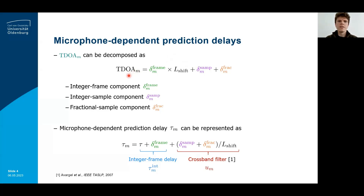By splitting the TDOA TDOA_m into a corresponding integer frame component delta_frame, a remaining integer sample component delta_samp, and a fractional sample component delta_frac, the non-integer microphone-dependent prediction delays tau_m can be decomposed into an integer frame delay tau_int and the remaining non-integer frame delay, which can be implemented using cross-band filters in the STFT domain, following previous work published by Avergal and Cohen.